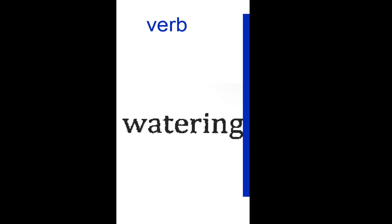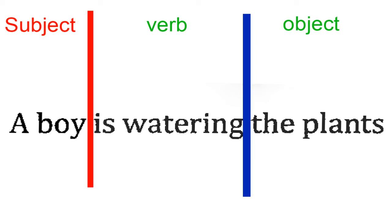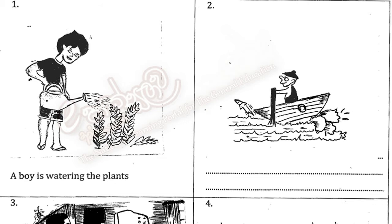Kriyava, the main verb, pradana kriyava. A boy is the subject, the plants are the object. What's the purpose of studying the structure of the sentence? You have to follow the same structure. Okay, first subject, then kriyava.